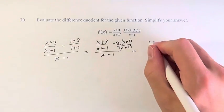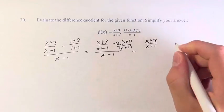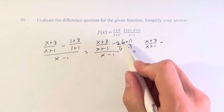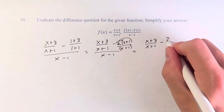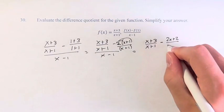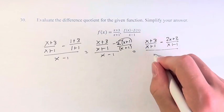So what this is going to turn into is x plus 3 over x plus 1 minus 2x plus 2 over x plus 1, all of that over x minus 1.